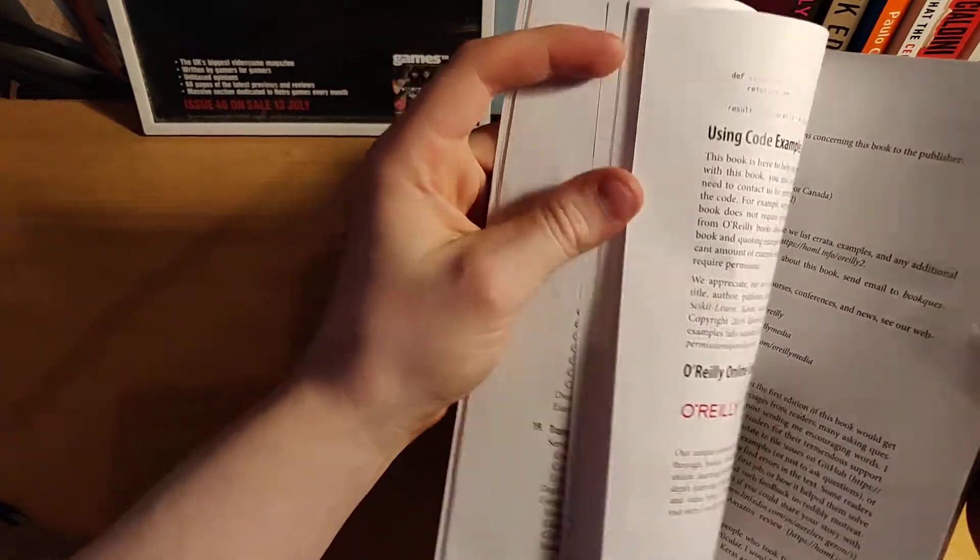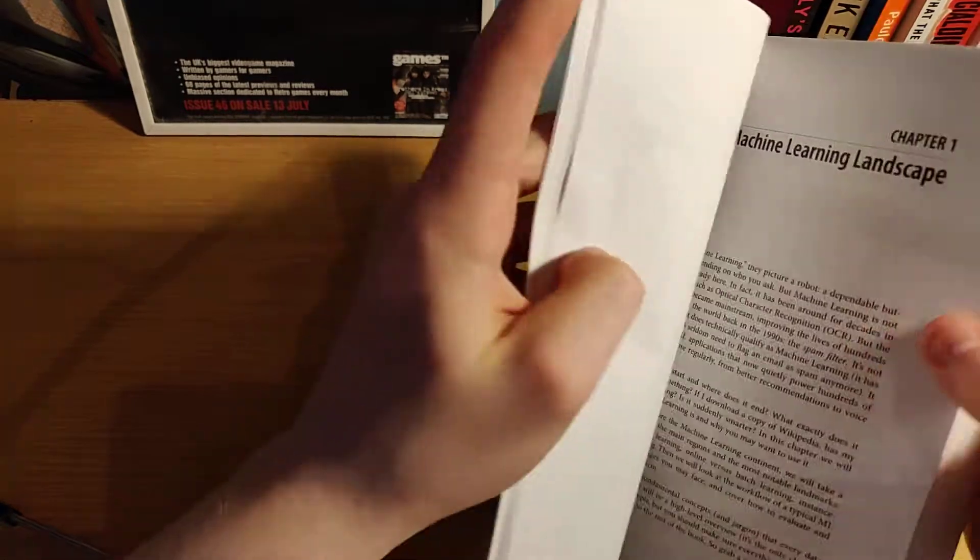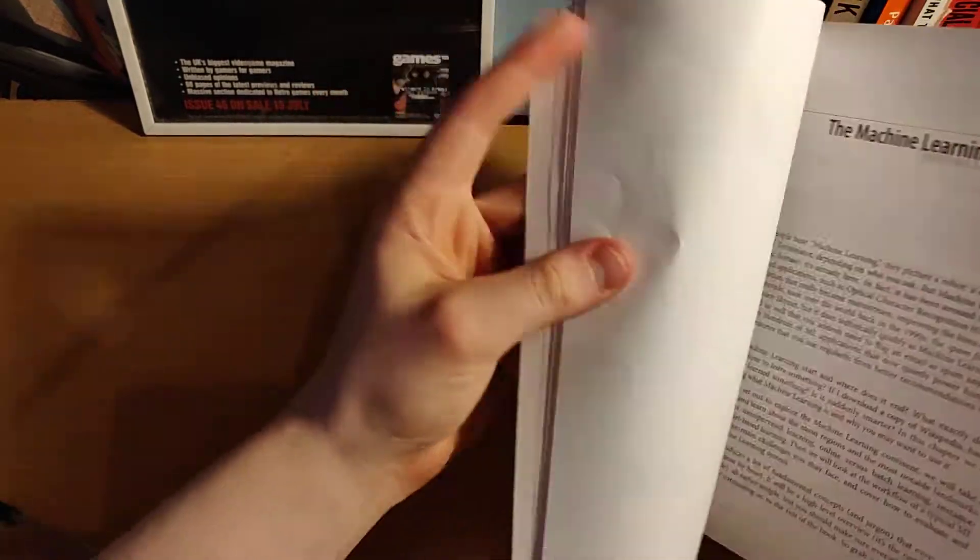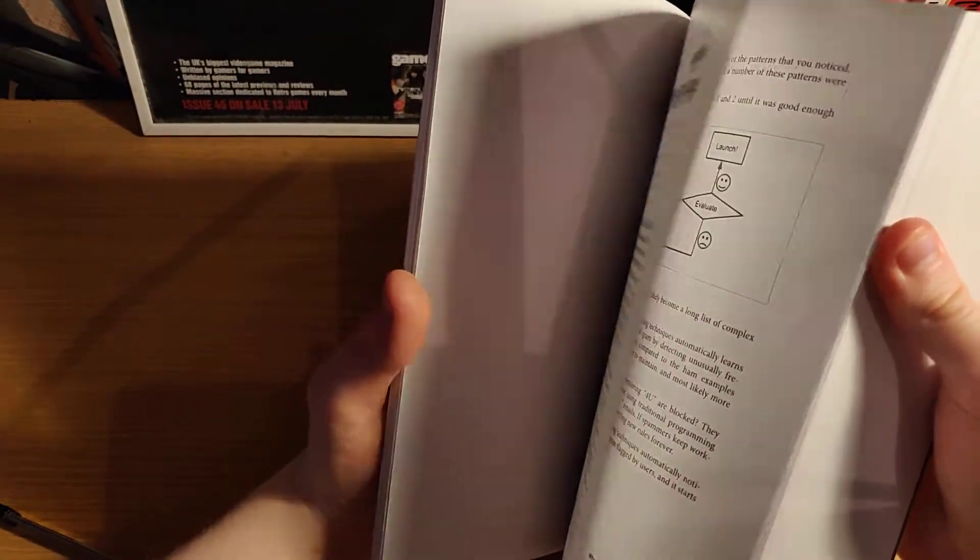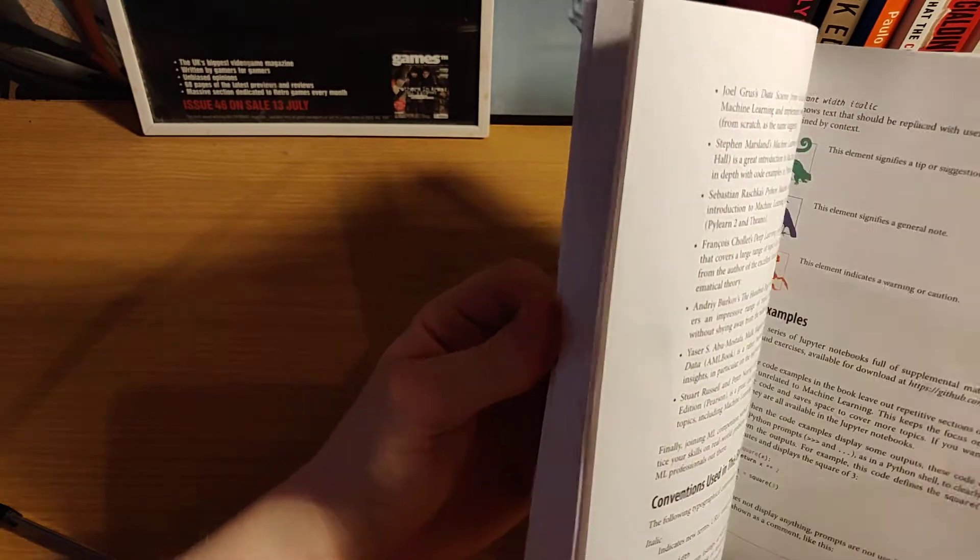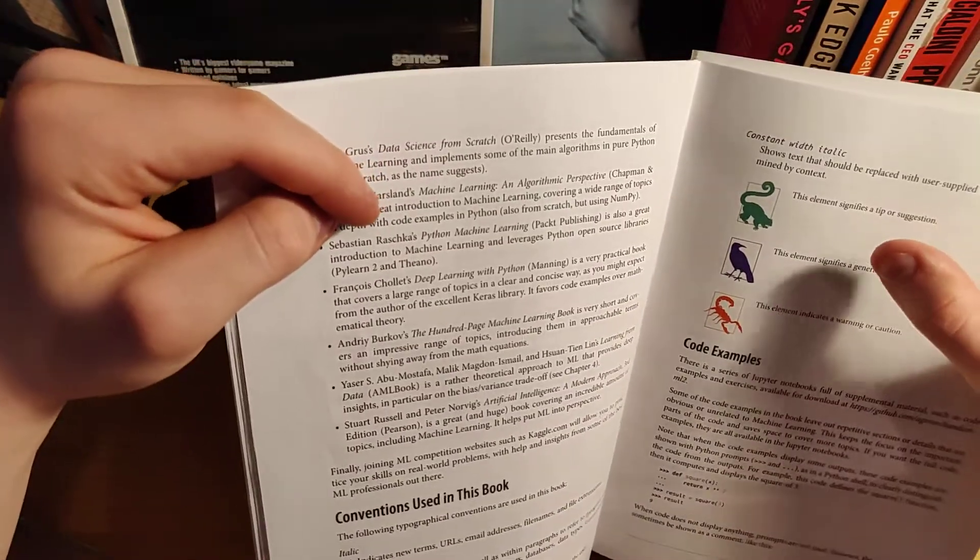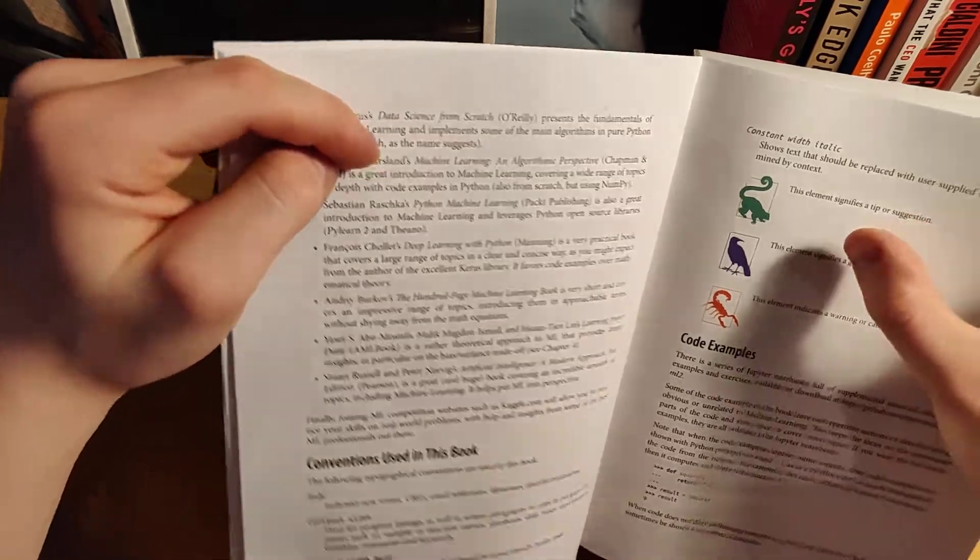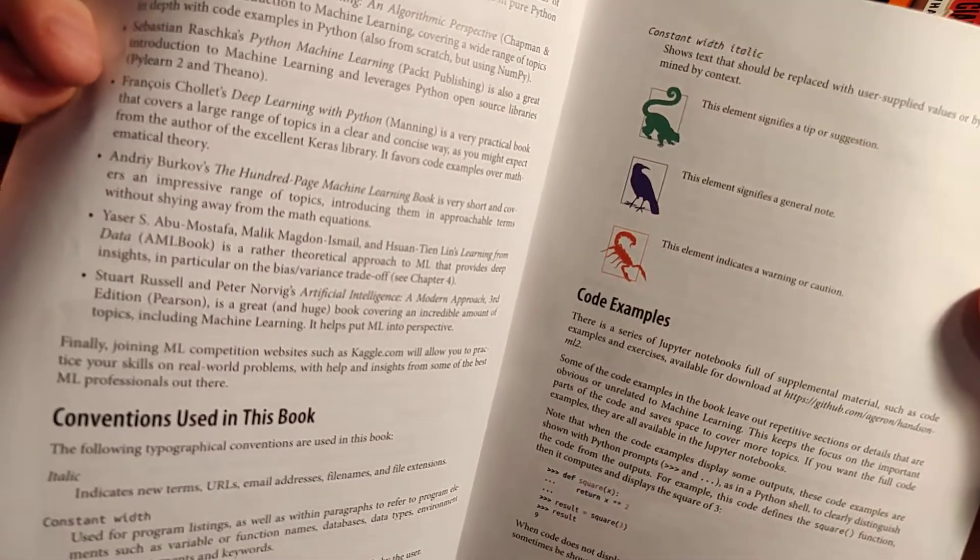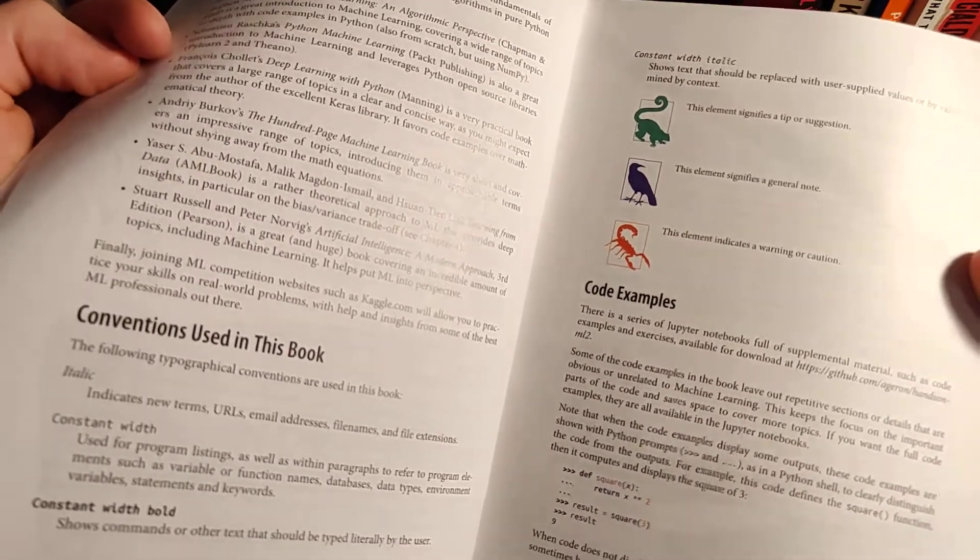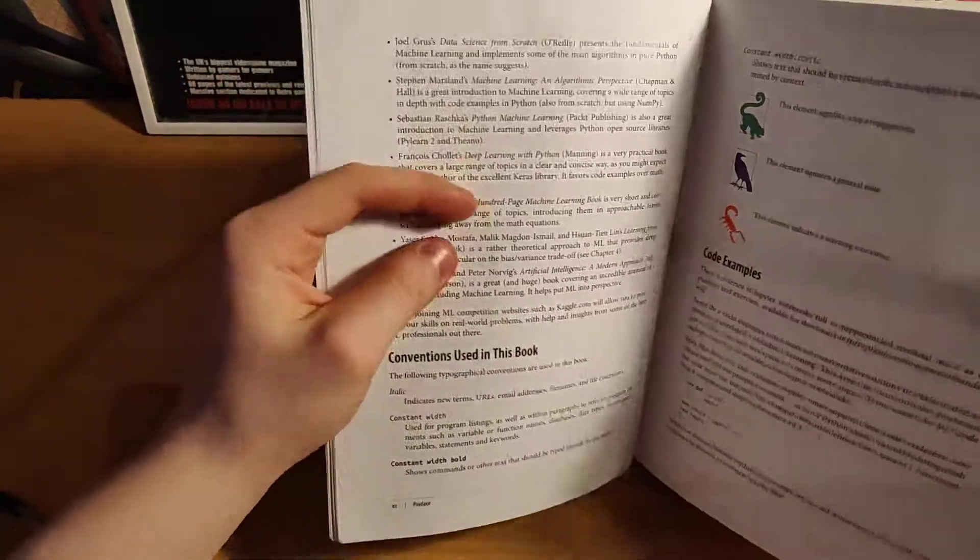So I think it's somewhere here. In the beginning of the book, it's not in the beginning, it's somewhere. Yeah, here. So the element signifies a tip or suggestion if it's a green monkey. If it's a blue crow, this element signifies a general note, and if it's an orange scorpion, the element indicates a warning or caution.